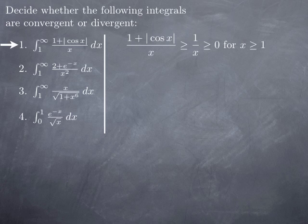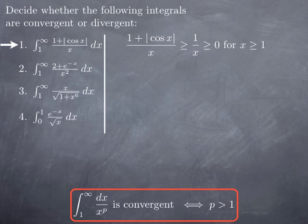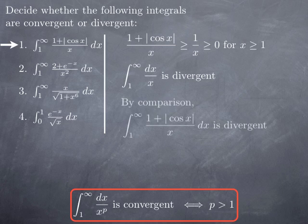We have established that the integral from 1 to infinity of 1 over x to the p is convergent when p is strictly greater than 1, and in particular divergent for p equal to 1. So the integral of 1 over x is divergent, and therefore by comparison, the integral of the larger function is also divergent.